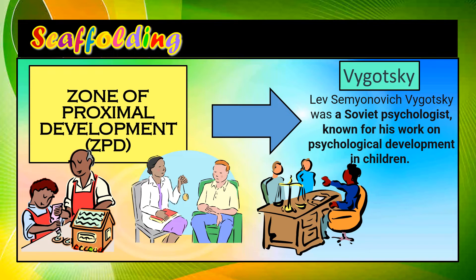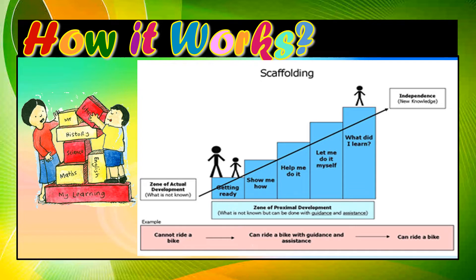We have Vygotsky — Lev Semenyavich Vygotsky — a Soviet psychologist known for his work on psychological development in children. Scaffolding is grounded in the principle of the Zone of Proximal Development, and Vygotsky is the one who formulated the ZPD theory. The zone of actual development refers to what is already known, while the zone of proximal development is what is not yet known but can be done with guidance and assistance.